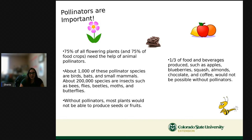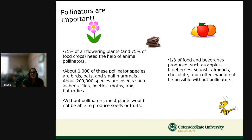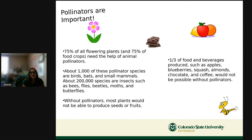Pollinators are very important — 75 percent of all flowering plants, including 75 percent of all food crops, need animal pollinators to reproduce. About 1,000 of these pollinators are birds, bats, or small mammals, but 200,000 are insects like bees, flies, beetles, moths, and butterflies. Without pollinators, one-third of all food and beverages — things like apples, blueberries, squash, almonds, chocolate, and coffee — wouldn't be possible.